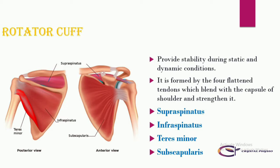The supraspinatus muscle lies above the spine of the scapula — 'supra' meaning above — and the infraspinatus muscle lies beneath the spine of the scapula — 'infra' meaning below.